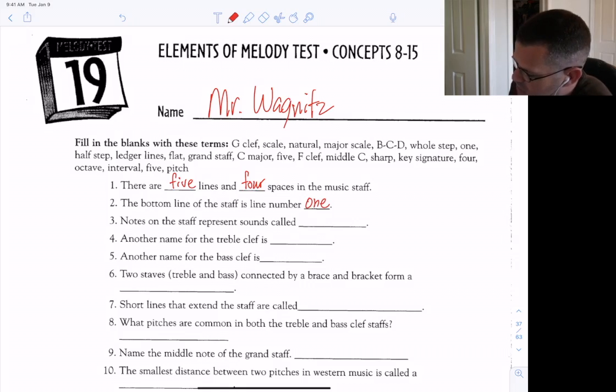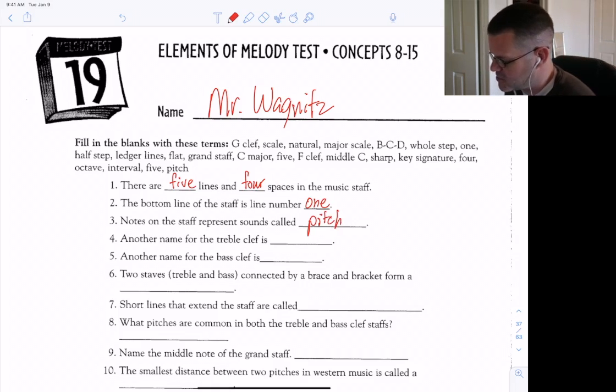Notes on the staff represent sounds called pitch, and another name for the treble clef is the G clef. Another name for the bass clef is the F clef.